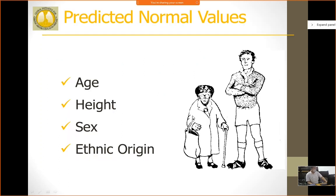How do we predict normal values for different kinds of people? This is a standardized test accounting for different age, sex, ethnicity, weight, and body surface area. We take into account age, height, sex, and ethnic origin — all these values are fed into the computer or spirometer. When doing spirometry we must enter all these patient values, and accordingly the system will show whether the patient is normal, abnormal, or has any disease.